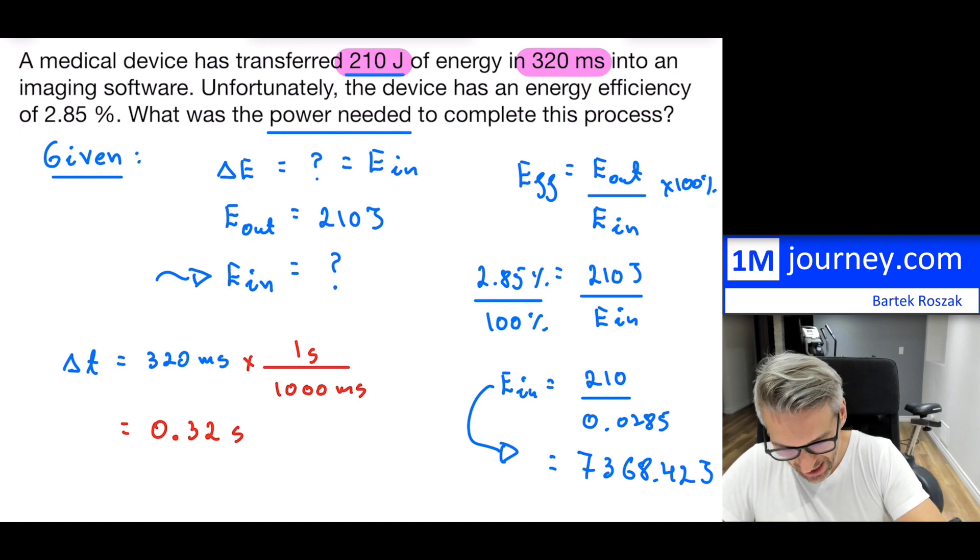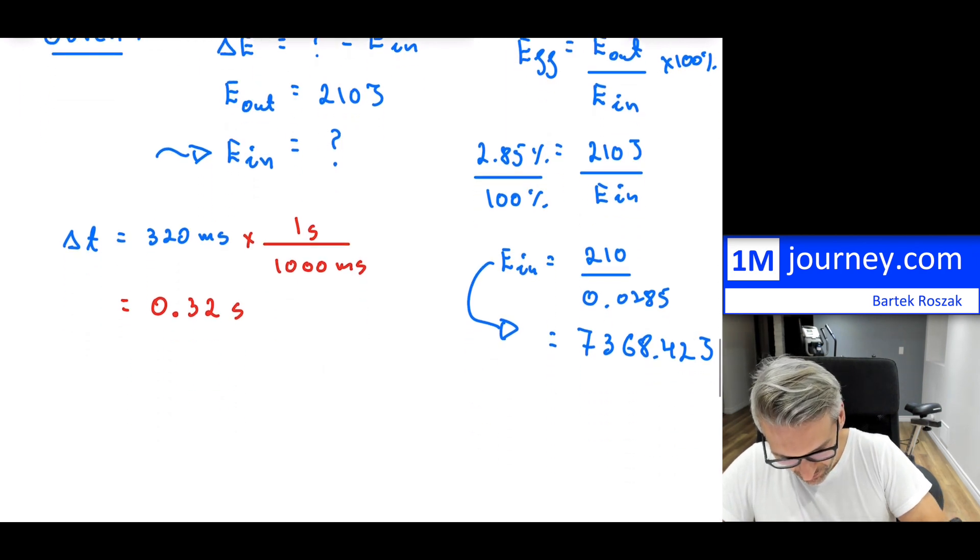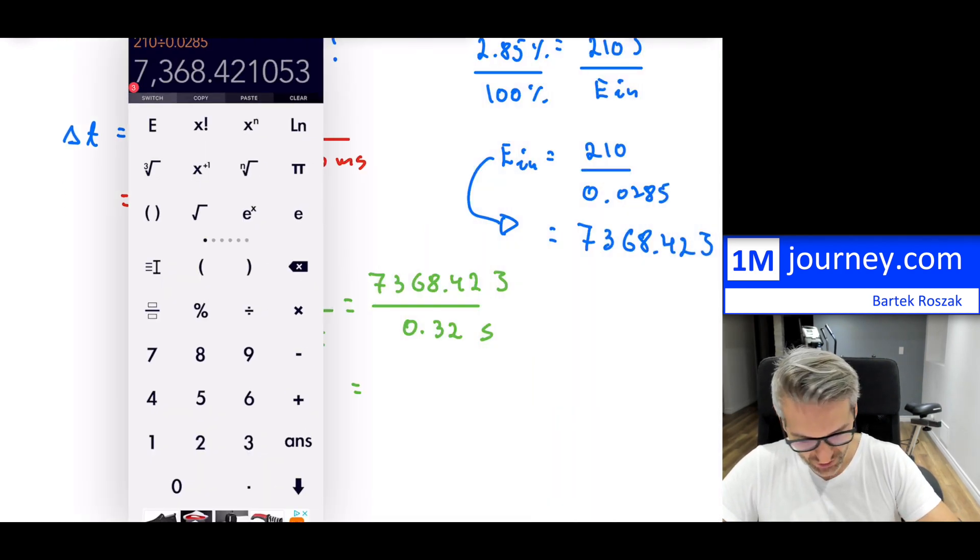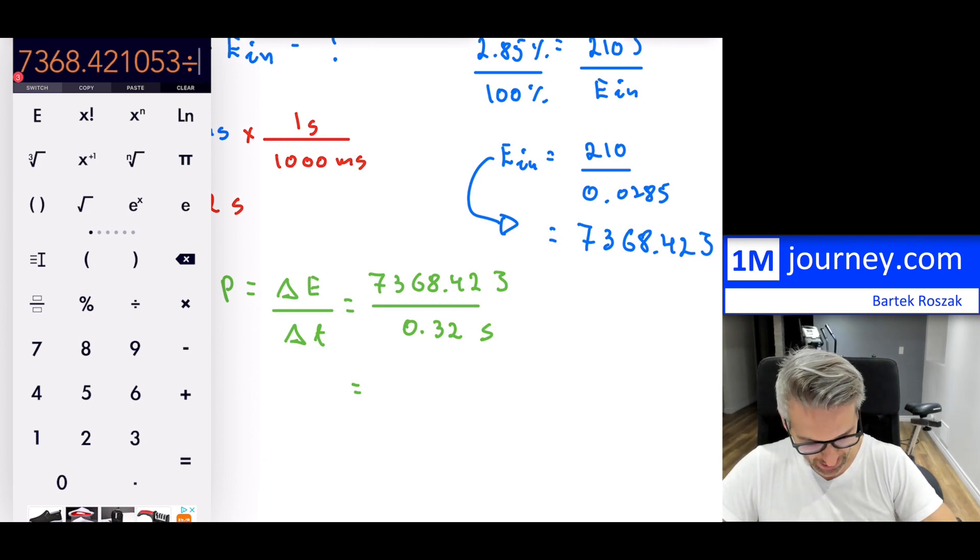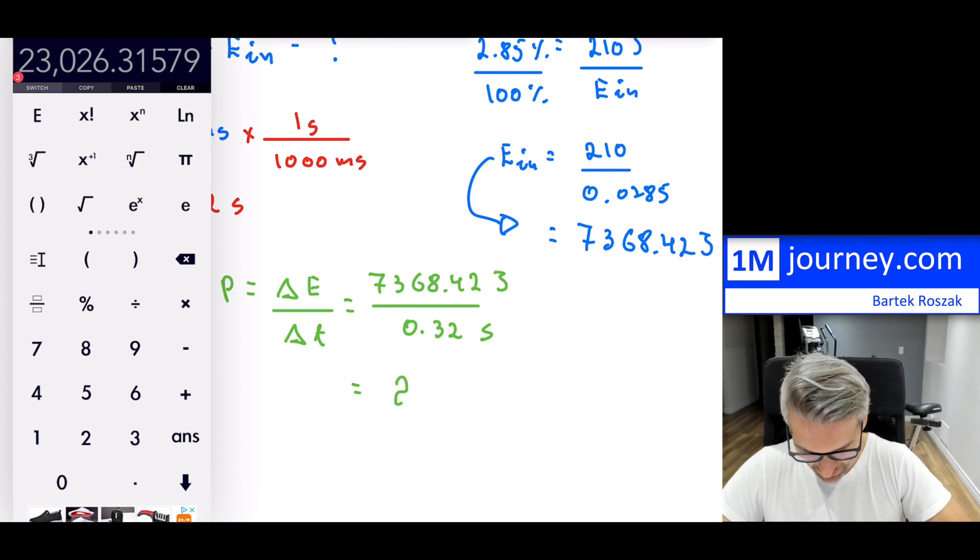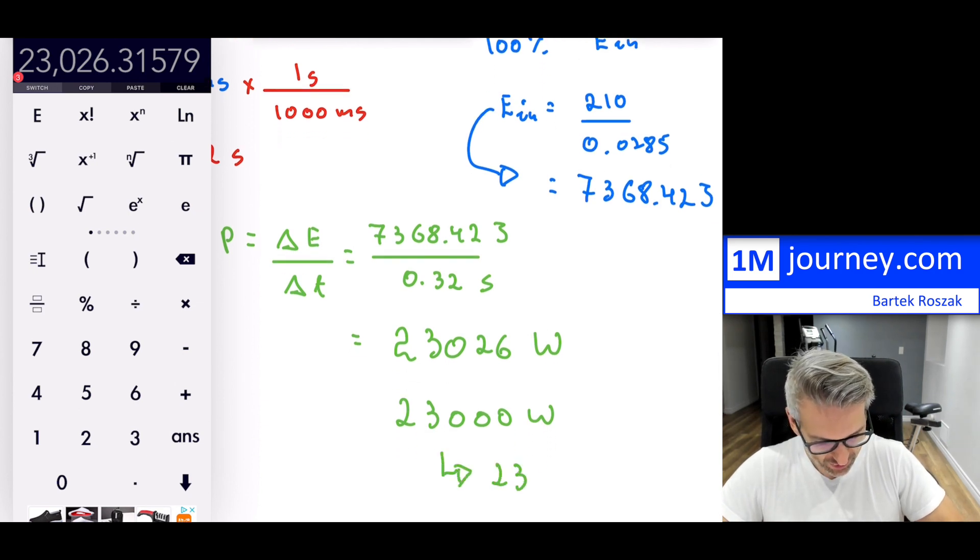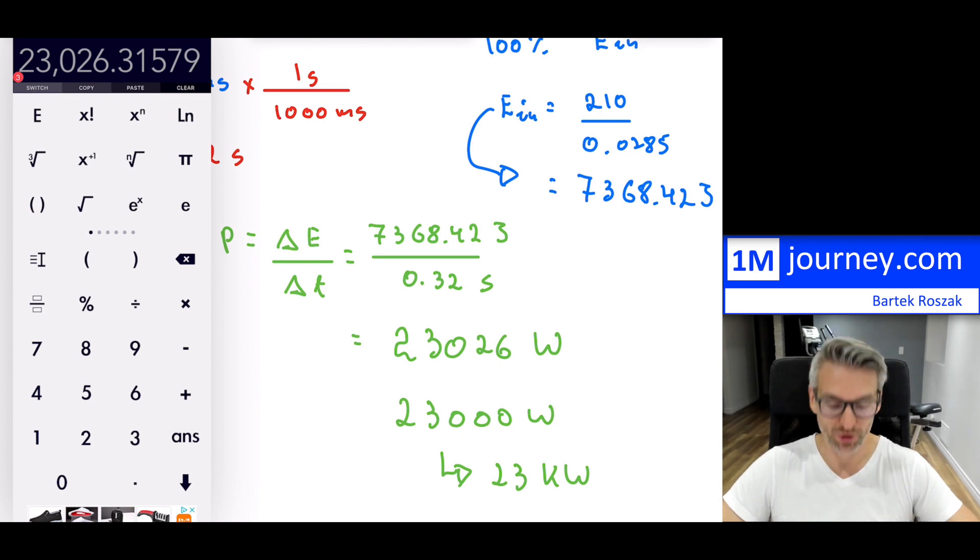If we want to know what the power needed to complete this process is, we have now our energy. That's my delta E from power. Now I still need to transfer this back into seconds. One second equals 1,000 milliseconds, or you can just move the decimal three places over. This is gonna be 0.32 seconds. Now you can calculate your power. P equals the change in energy, in this case delta T, and that's gonna be 7,368.42 divided by 0.32. This is joules, this is seconds, so we're gonna get watts back. Let's take this, divided by 0.32. And we have, notice 23,026 watts. So this is about 23,000 watts or you can say 23 kilowatts.